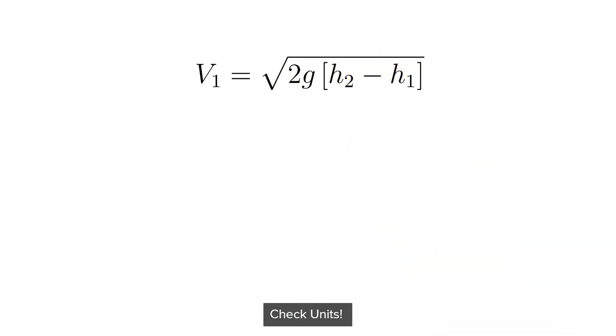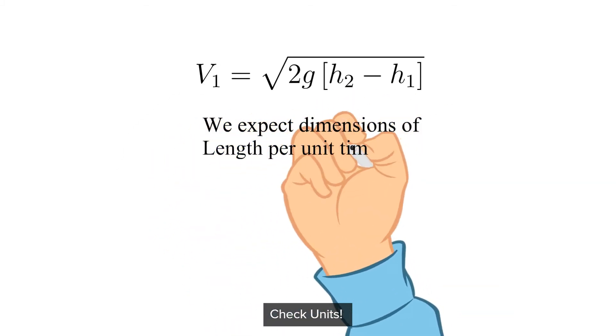Looks like we are done. No. We should always do a dimension and or unit check. We should obtain the dimensions of velocity, which are length per time, or L over T. Let's check.